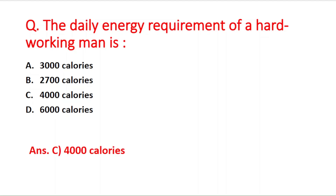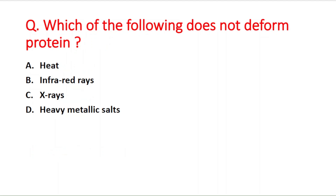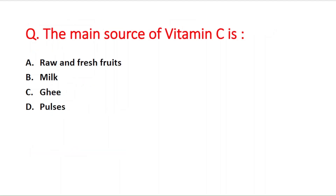Next question: which of the following does not denature protein? Option A is heat, B is infrared rays, C is X-rays, and D is heavy metallic salt. The right answer is option B — infrared rays.